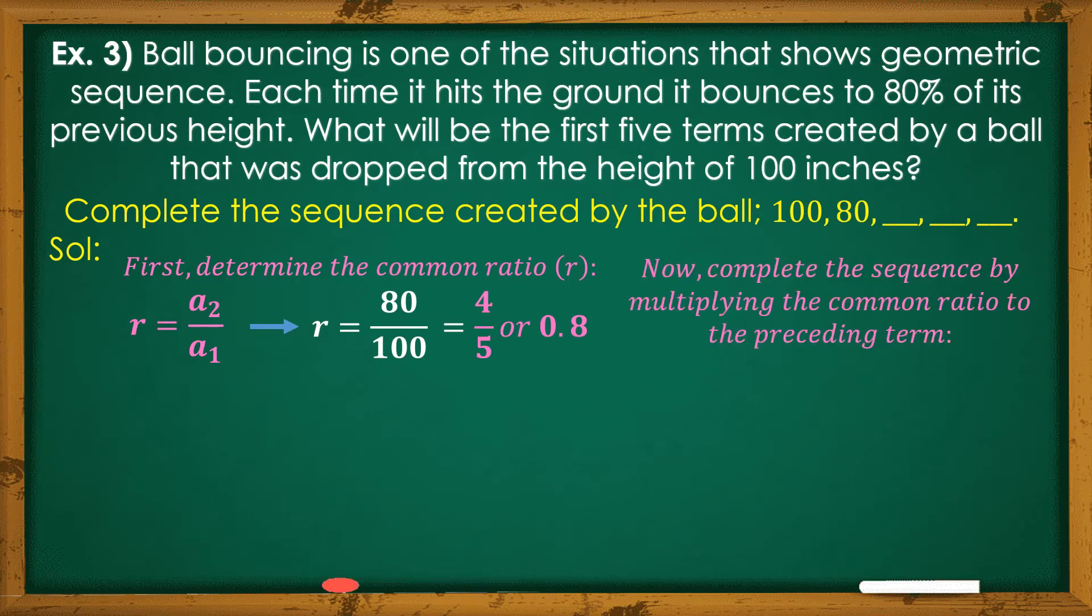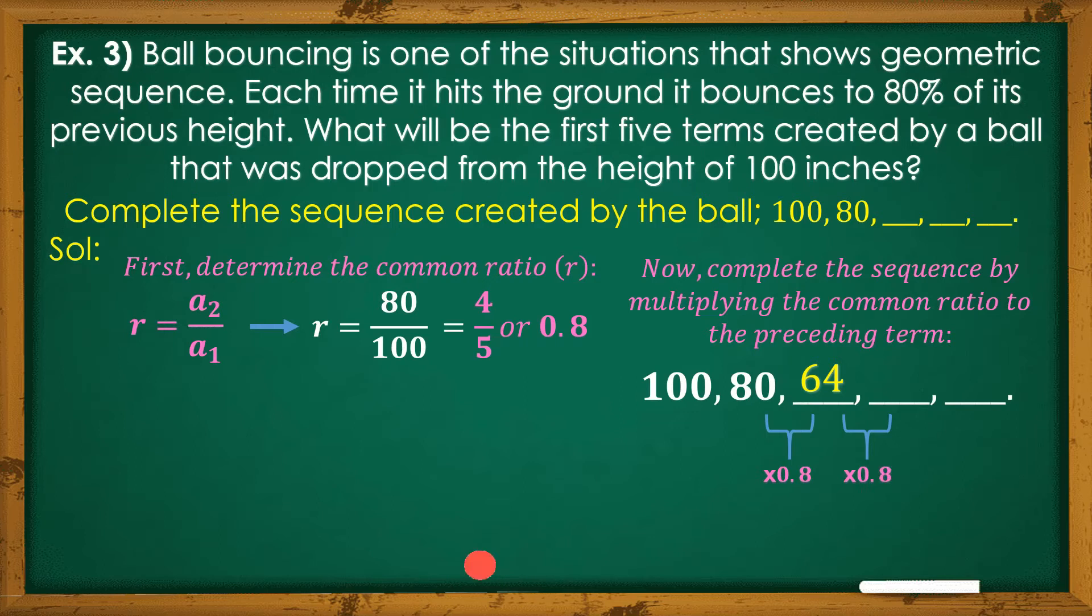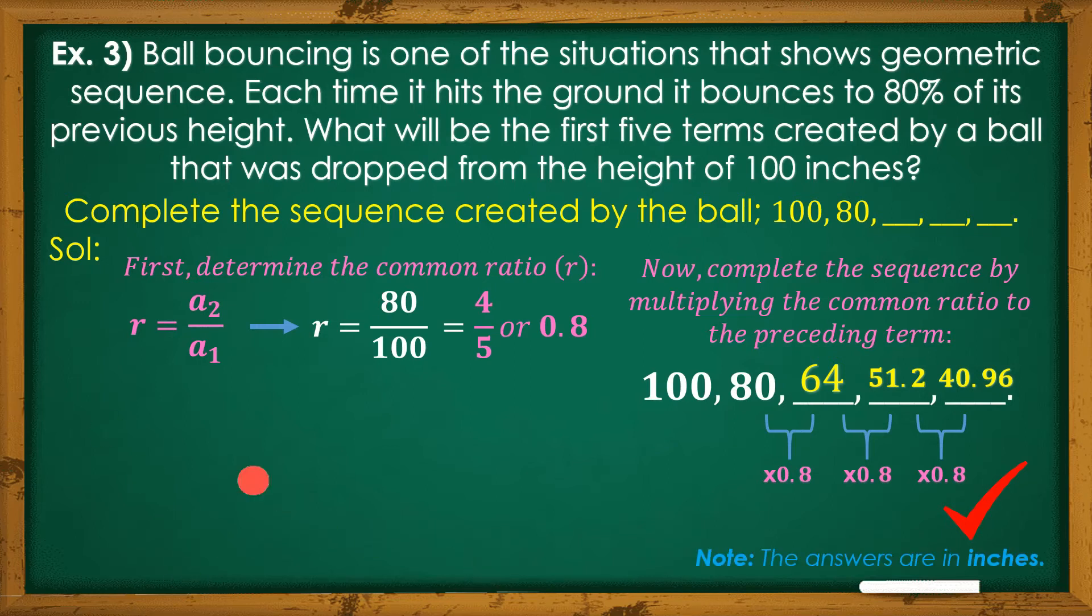Now, let's complete the sequence by multiplying the common ratio to the preceding term. Now, yung kailangan natin is yung susunod sa 80. Using the common ratio, 0.8, and by multiplication, we will get 64. Again, by multiplying 0.8, we will get 51.2. And lastly, 51.2 times 0.8, we will get 40.96. That gives us the complete sequence, particularly geometric sequence, of this given problem.